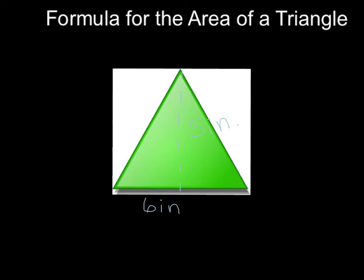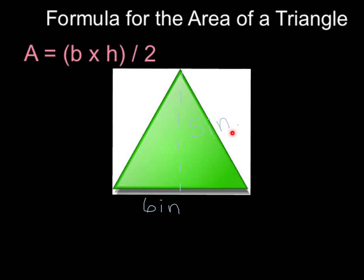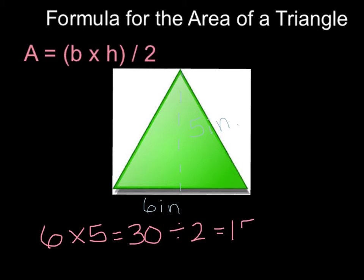Now let's look at the formula for finding the area of a triangle. Any triangle is basically half of a rectangle — whether it's a right triangle, scalene triangle, or isosceles triangle, any triangle is essentially half of a rectangle. The formula is A equals base times height divided by two. In the triangle on the screen, the base is 6 inches and the height is 5 inches. We multiply those together to get 30, then divide by two to get 15. We express the area as 15 inches squared, because inches is the given unit and we multiplied two dimensions.